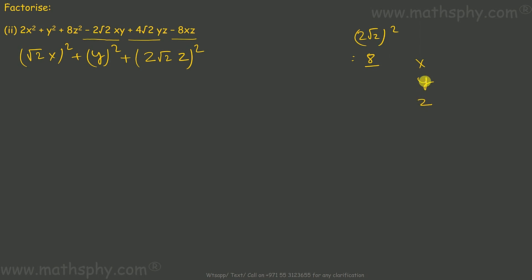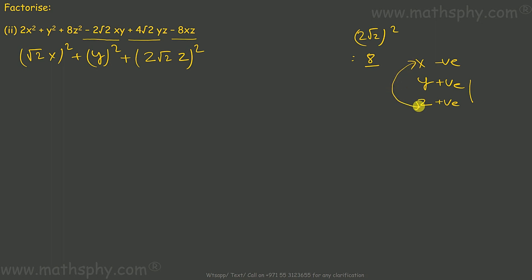If I take x as negative and y as positive, then xy would be negative. If I take z also as positive, then yz will be positive and xz would be negative. So: negative, positive, negative. That gives me negative √2·x as the first term, so the factored form will be (-√2·x + y + 2√2·z)².